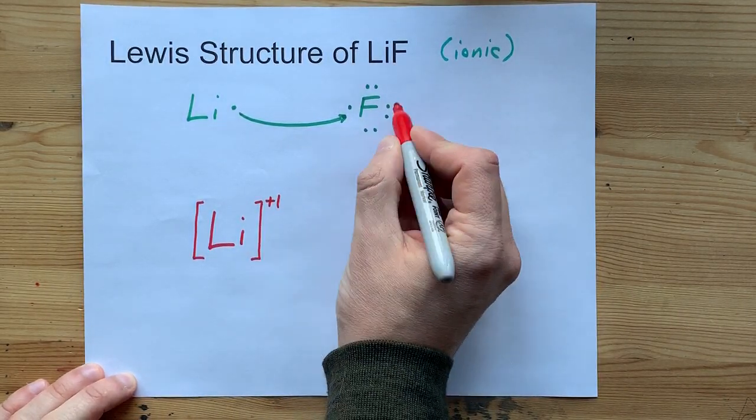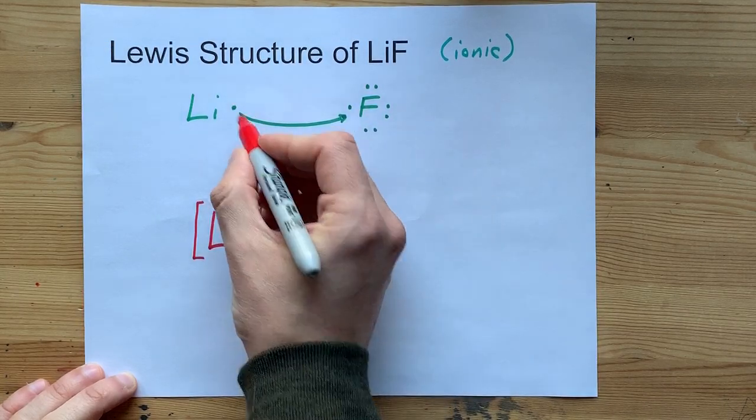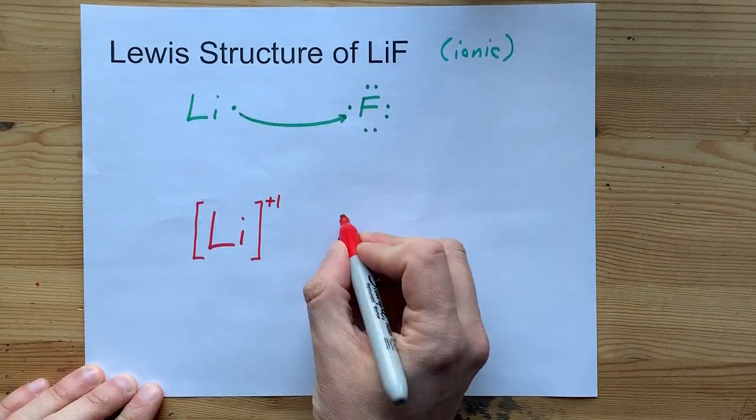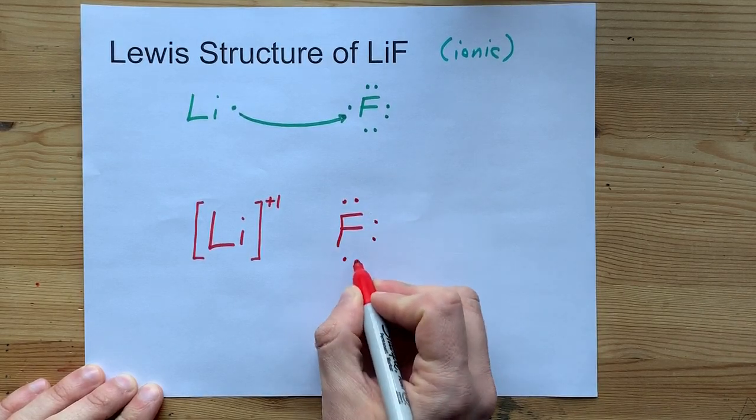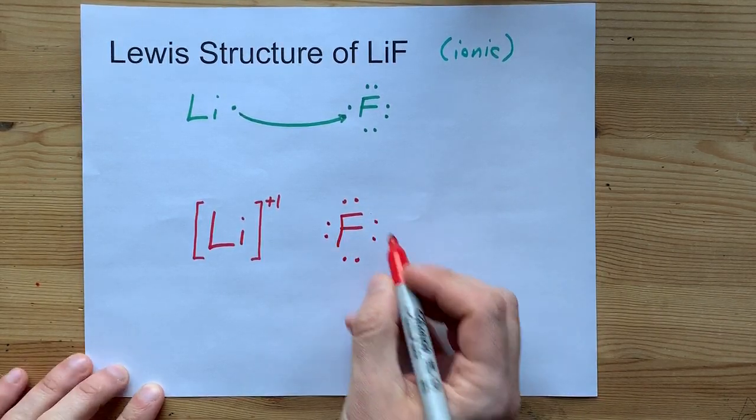The fluorine had seven electrons around it and now an eighth. So I'm going to draw my F: one, two, three, four, five, six, seven, eight electrons now.